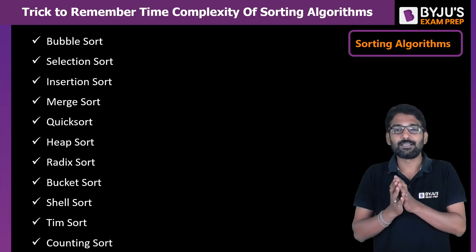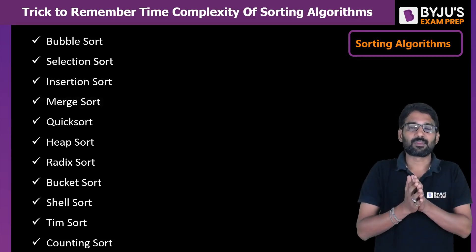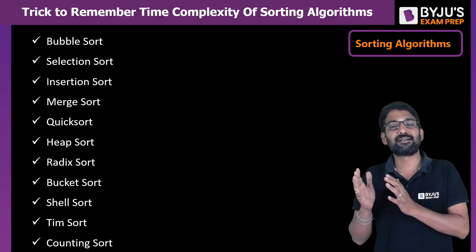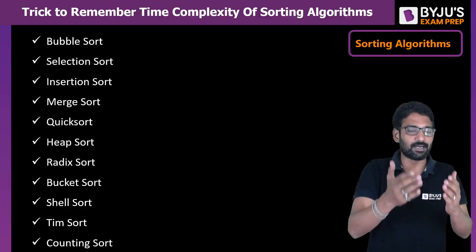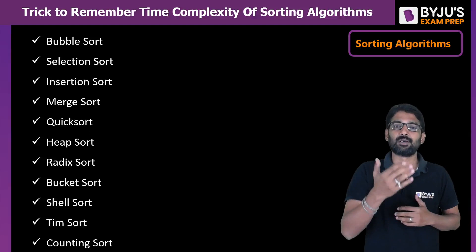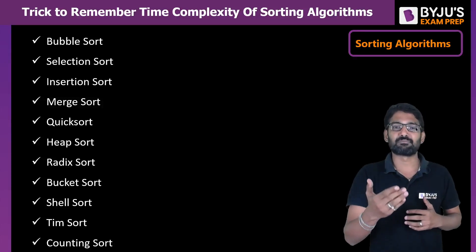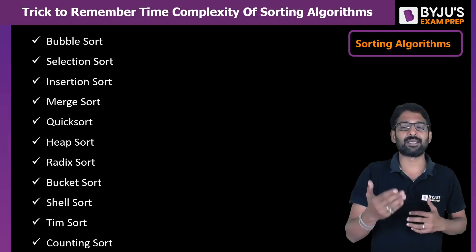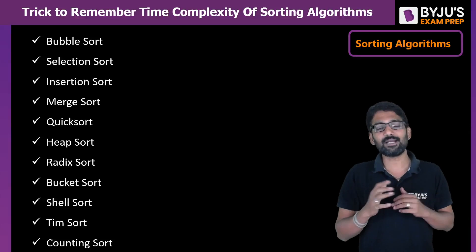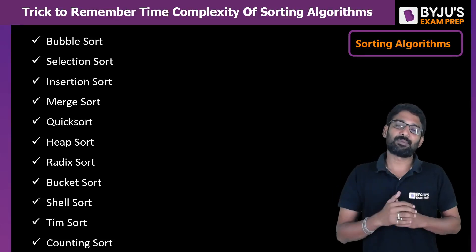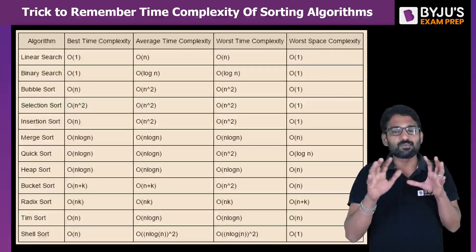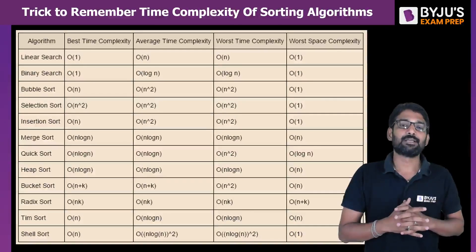We know that sorting algorithms will sort the given elements in ascending or descending order. Different sorting algorithms — bubble sort, selection, insertion, merge, quick, heap, and so on. If we look at the time complexities, this is what the time complexity chart looks like.